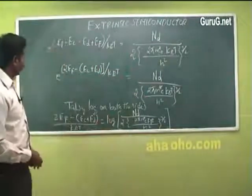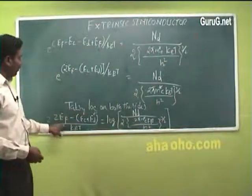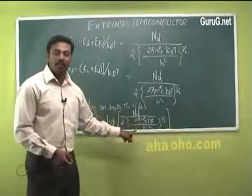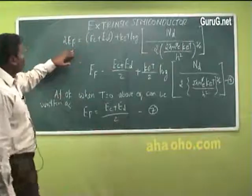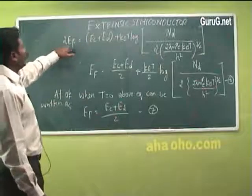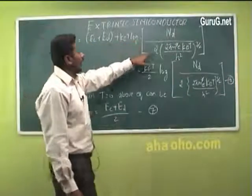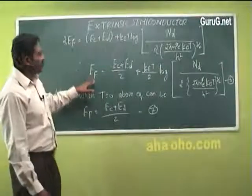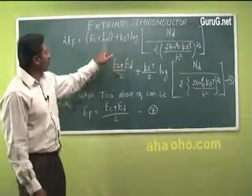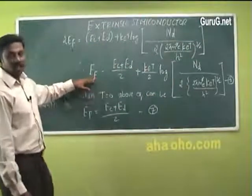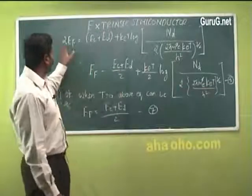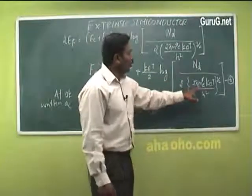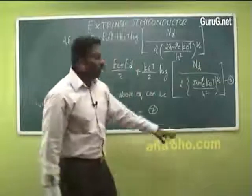Taking log on both sides, the equation becomes: (2E_F − E_C − E_D) / k_B T = log(n_D / [2(2π m*_e k_B T / h²)^(3/2)]). Simplifying, the Fermi energy level is: E_F = (E_C + E_D) / 2 + (k_B T / 2) · log(n_D / [2(2π m*_e k_B T / h²)^(3/2)]). This is equation 6.